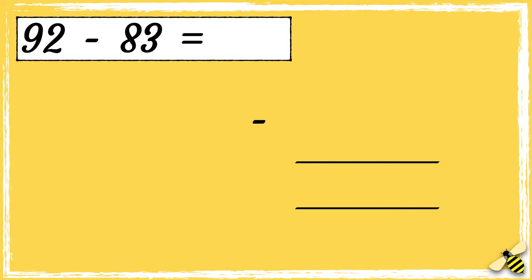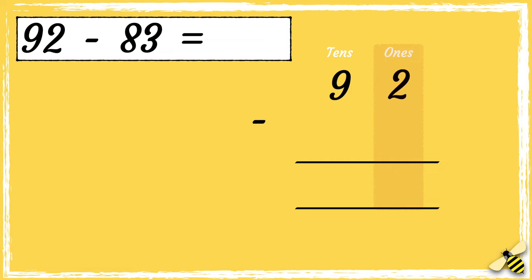Let's have a look at one more example: 92 subtract 83. Remember, we need to line our numbers up correctly. The number 92 has nine tens and two ones. The number 83 has eight tens and three ones. Now that we're set up, we can subtract the digits in each column starting from the right. We can't subtract three from two.